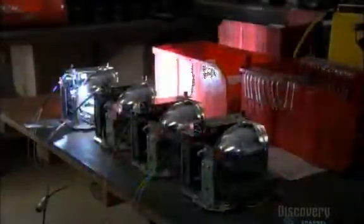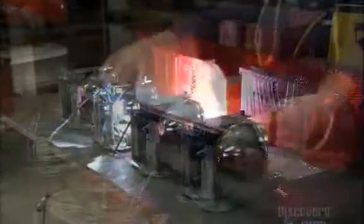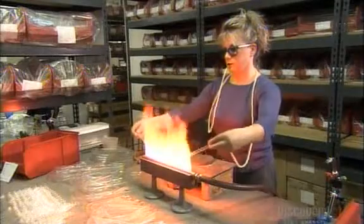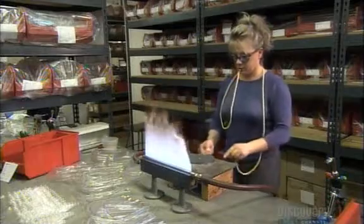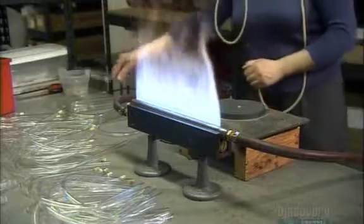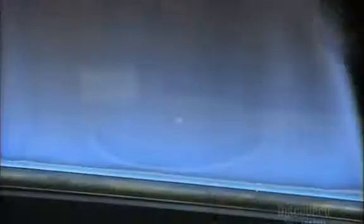A strobe lamp emits repeated flashes of high-intensity light. At this factory, production begins with glass blowers. Using a ribbon burner, they heat glass tubes to 1600 degrees Celsius. This softens the glass for bending into a specific shape.